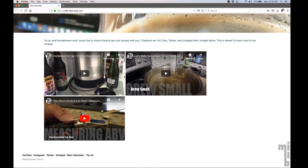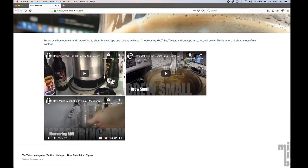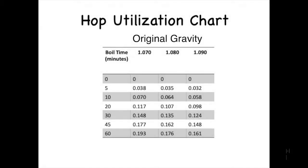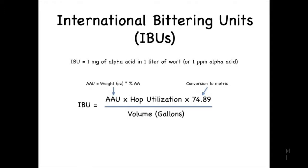If you want to know how to compute the original gravity, watch my video on computing ABV. The utilization isn't something you compute — rather it's something you will look up. This is because the utilization values were determined experimentally by beer researchers, which is apparently a job. So once you've found yourself a hop utilization chart, just look up the OG and boil time and make a note of that value.